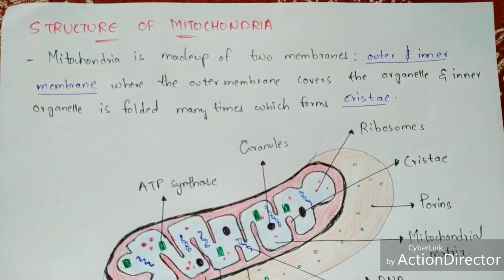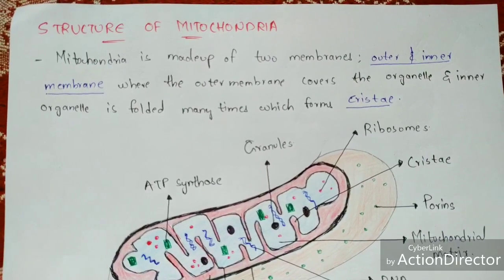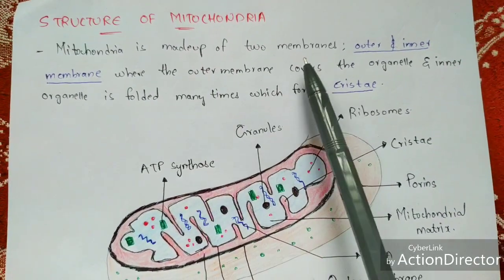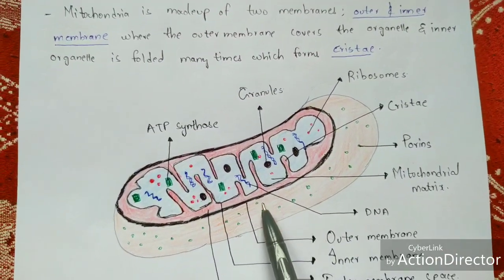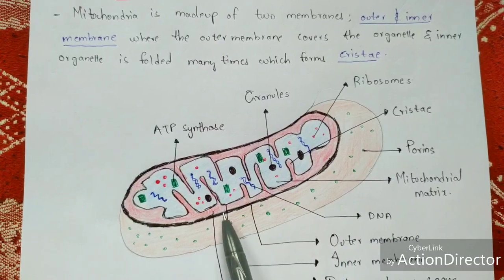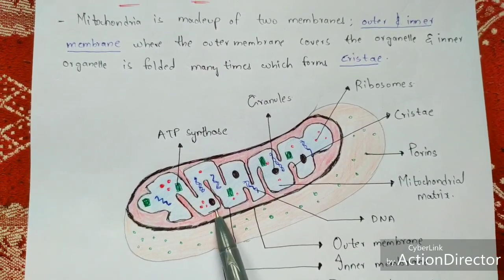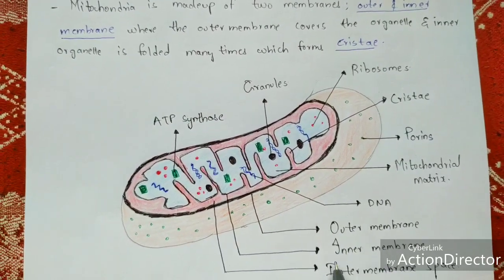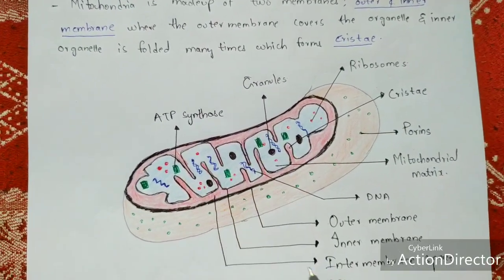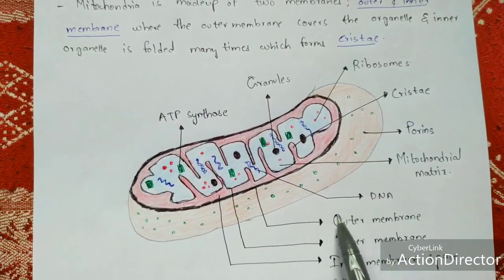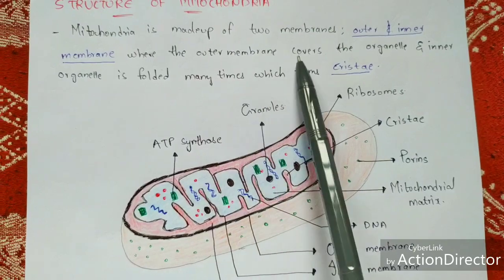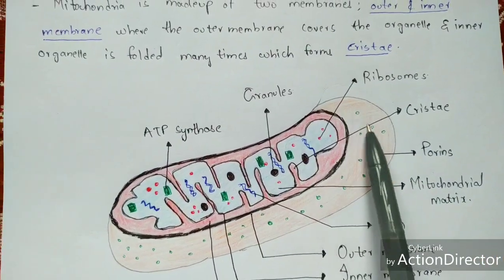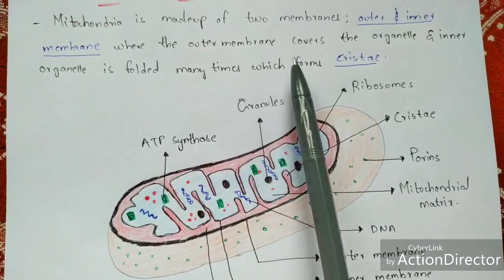Mitochondria is made up of two membranes — outer and inner membrane. The outer membrane covers the organelle, and the inner membrane is folded many times which forms the cristae. Between the outer membrane and inner membrane there is a space called the inter-membrane space.